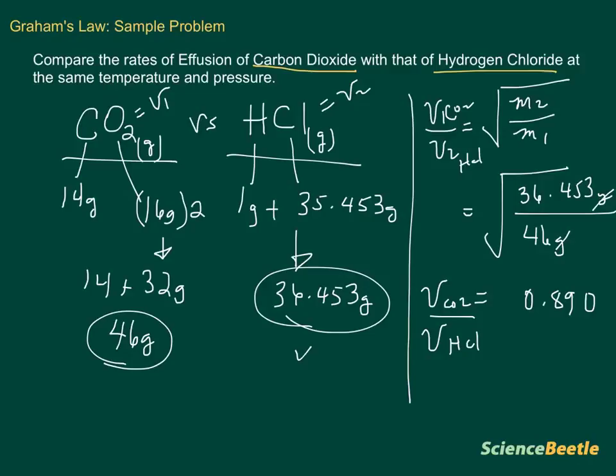The way we really know this is we do the opposite. If we do the velocity of HCl over the velocity of the CO2 and run those numbers, substituting them for the mass 2 and the mass 1, we divide 46 divided by 36.453 and take the square root of that number. When we do that, we get 1.12.